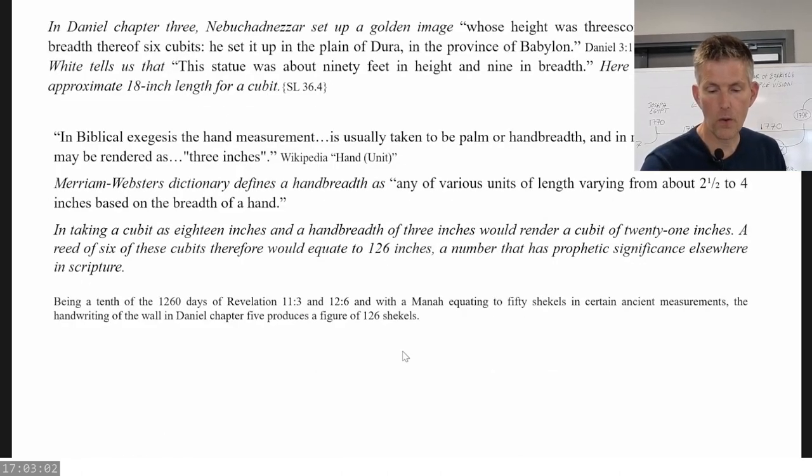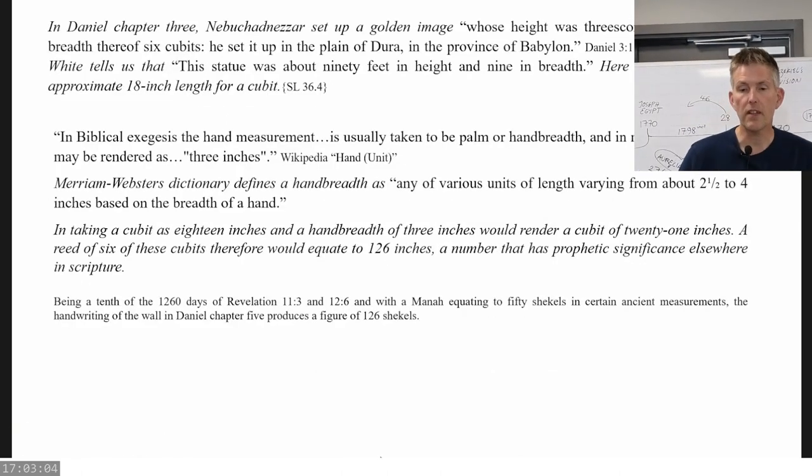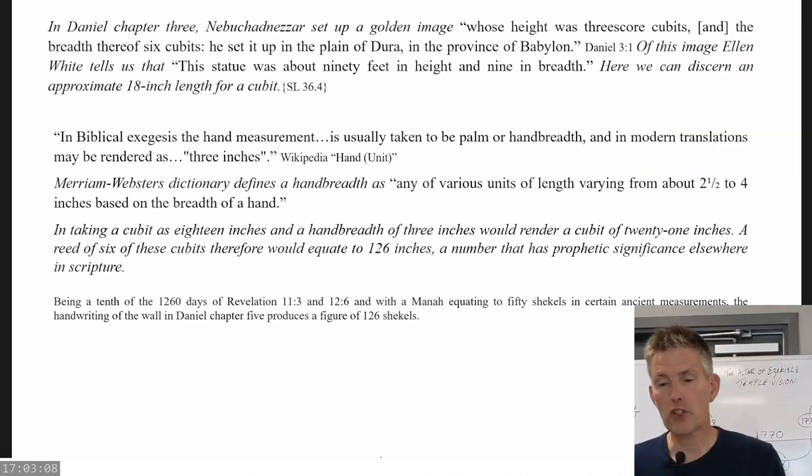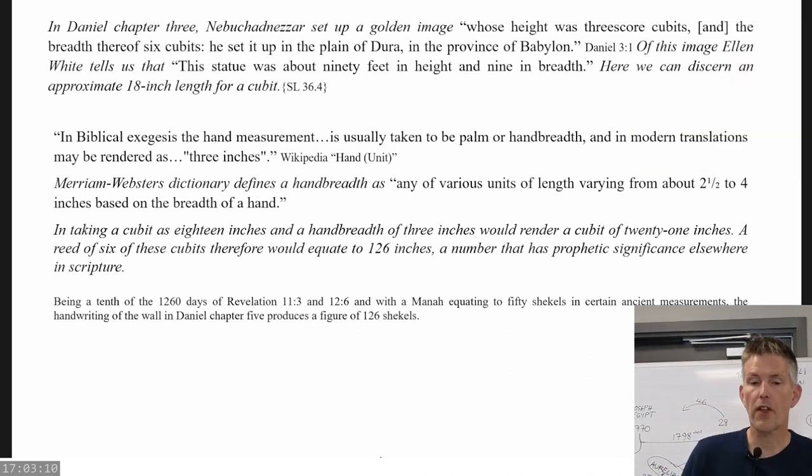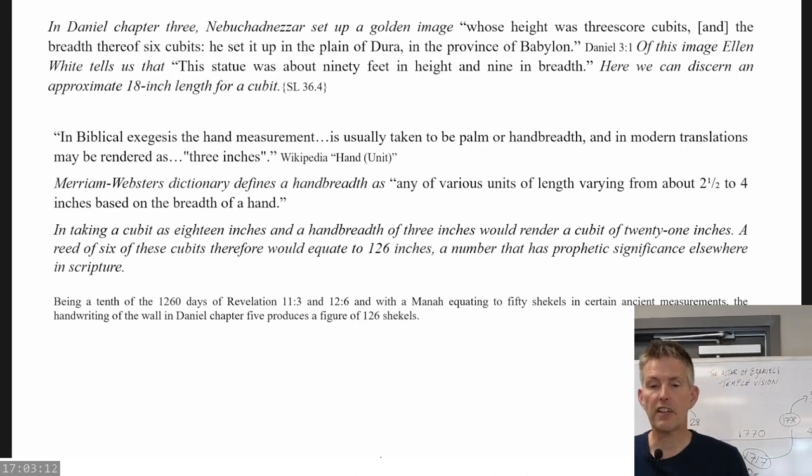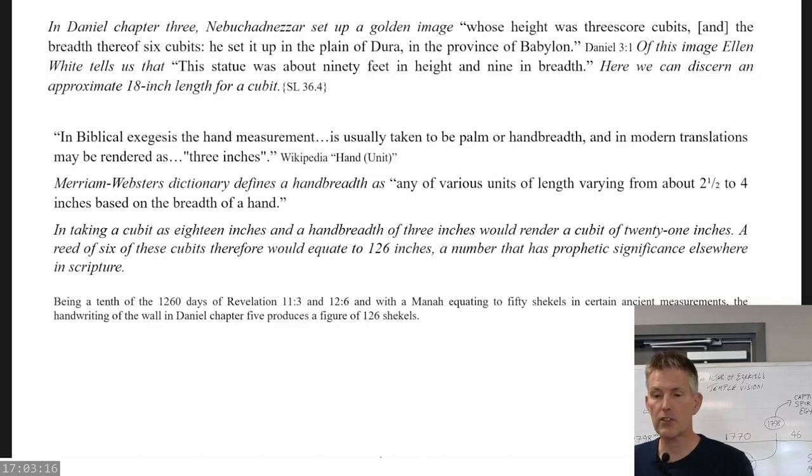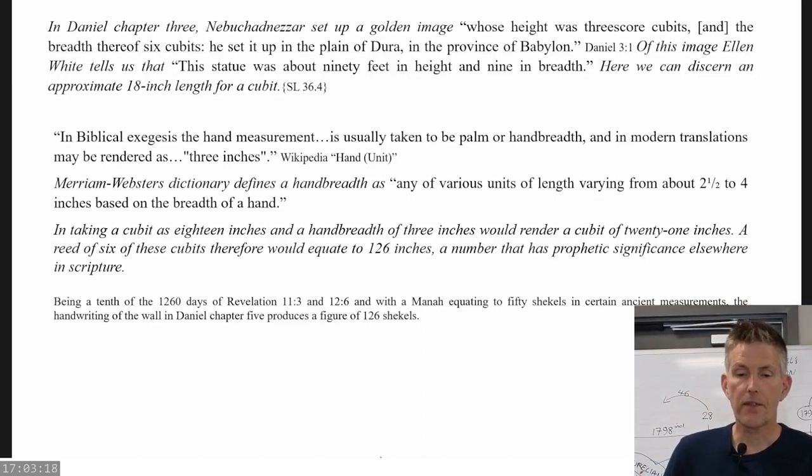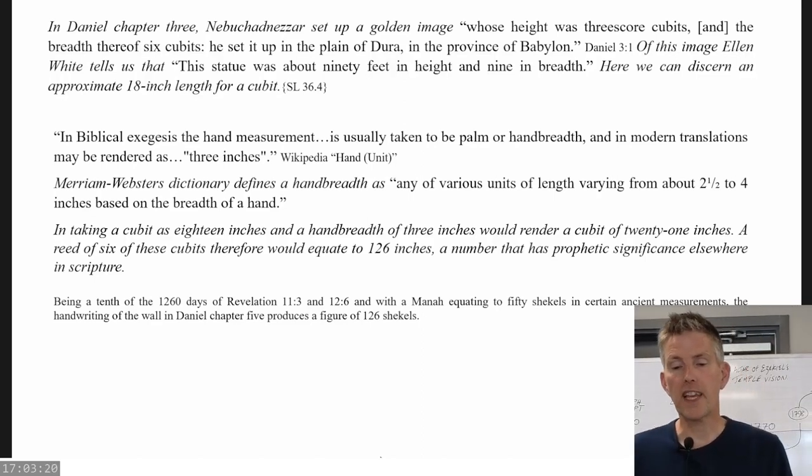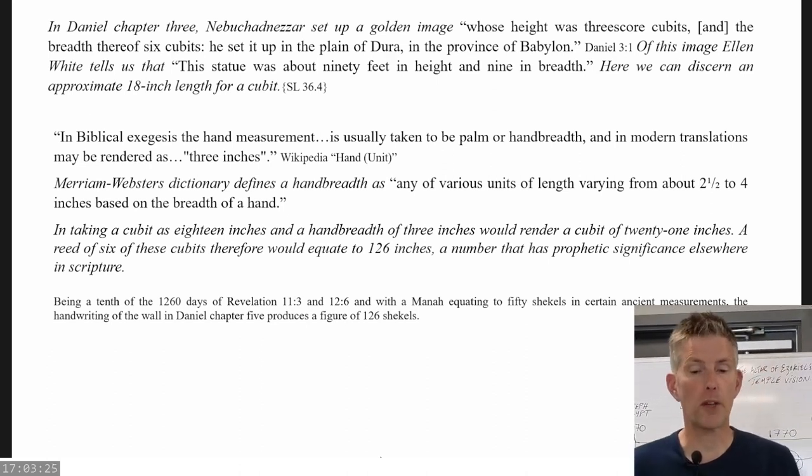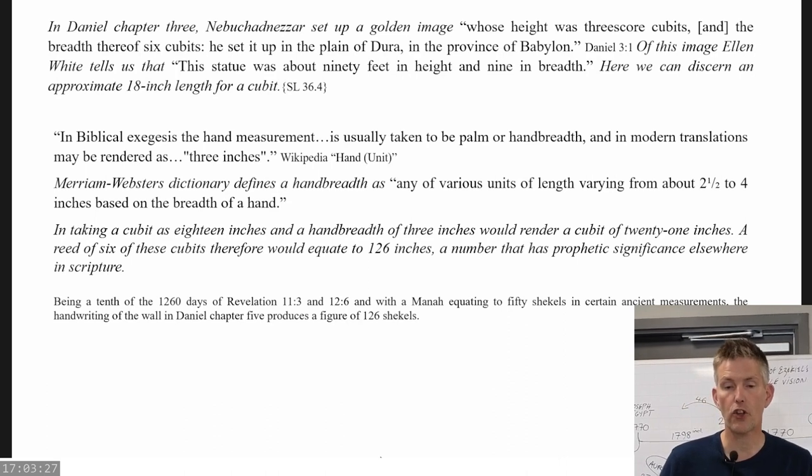So ten and a half feet equates to 126 inches. A span is the distance measured by a human hand from tip of the thumb to the tip of the little finger. In ancient times, the span was considered to be half a cubit, so that's from Wikipedia. So therefore, 126 inches divided by 6.5 cubits equates to 19.384615 and so on inches per cubit in this instance.